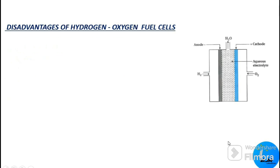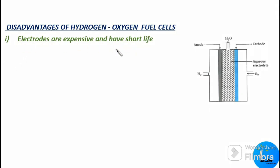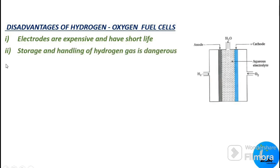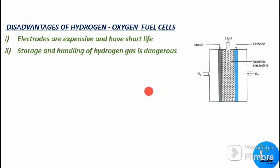The disadvantages: the electrodes are expensive and have a short lifespan. The storage and handling of hydrogen gas is very dangerous, as hydrogen is corrosive in nature, making it difficult to build adequate storage containers. That concludes today's session — I hope you have understood. This is Dr. Nitaraj, your chemistry mentor, signing off. Thanks for watching.